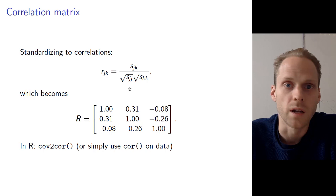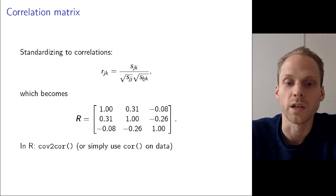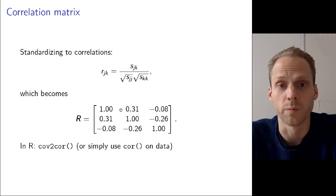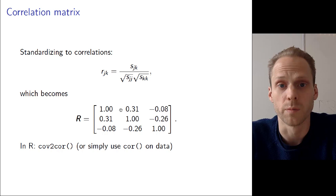Finally, we can standardize the covariance matrix to a correlation matrix by taking each element and dividing it by the product of the square roots of the corresponding diagonal elements. For example, take 0.35 and divide it by the square root of 1.11 times the square root of 1.18, and we get a value between minus one and one that we can interpret. In R we can use cov2cor for that.